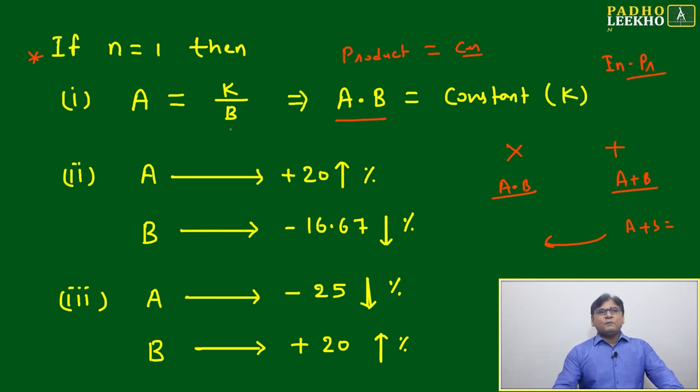Inversely proportional, okay. Means any other constants are not involved. Now just we'll check the amount of variation. If A is inversely proportional to B, one thing is sure: if A will increase B will decrease, if A will decrease B will increase, that will be reverse order. But how much?